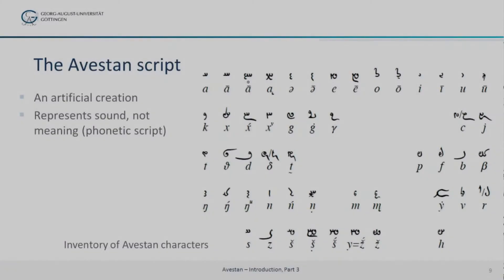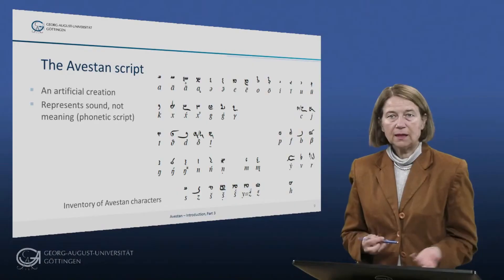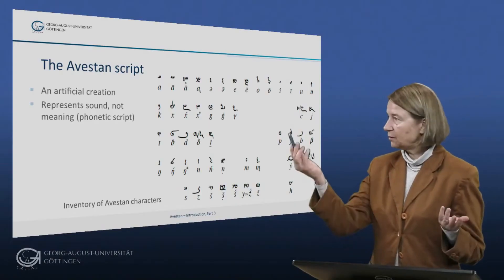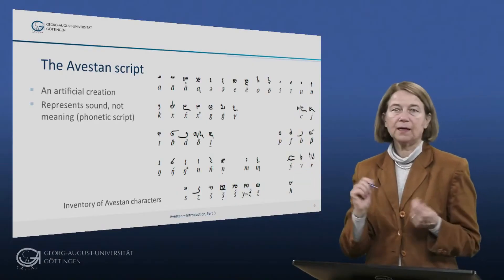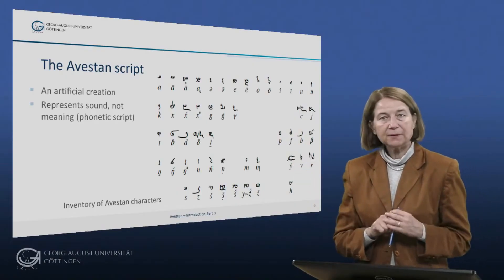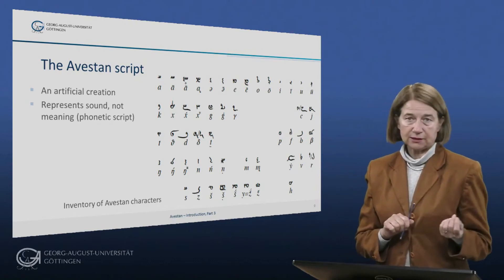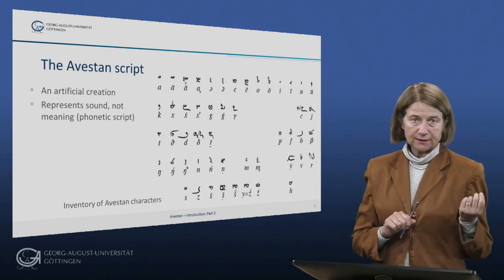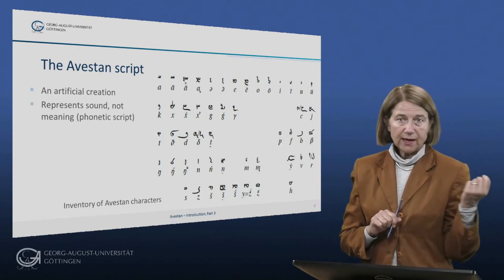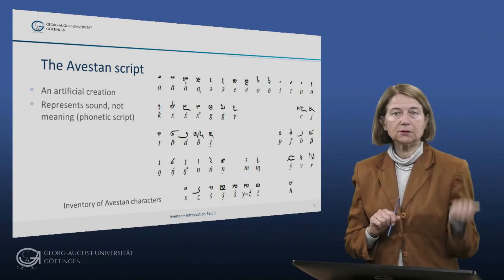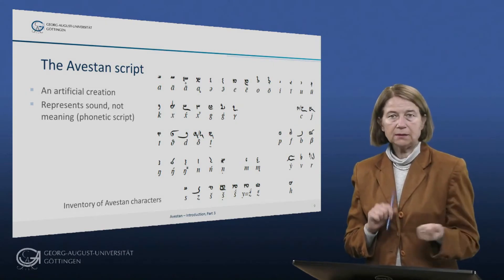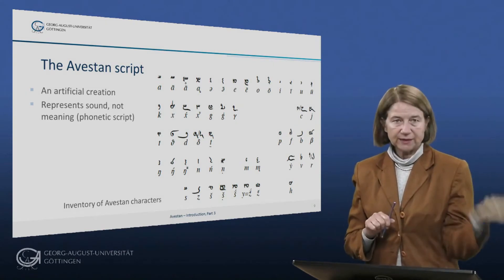The Avestan script has two main features. One is that it is an artificial creation, which happened at a certain point in time. The second characteristic of the Avestan script is that it represents sound, not meaning. The script is phonetic, not phonemic.